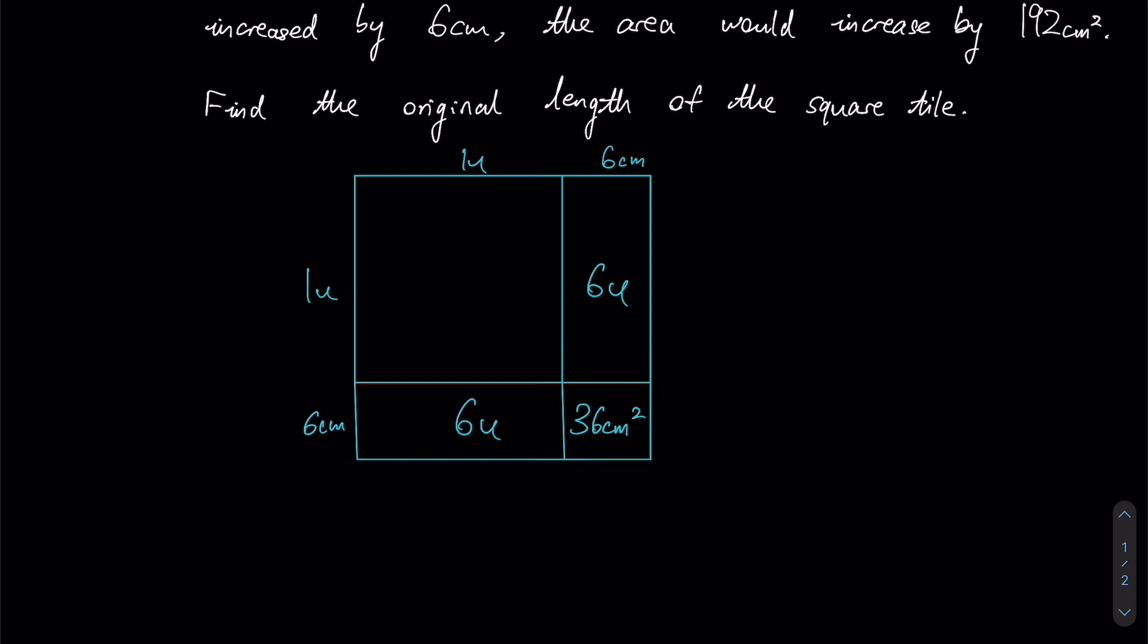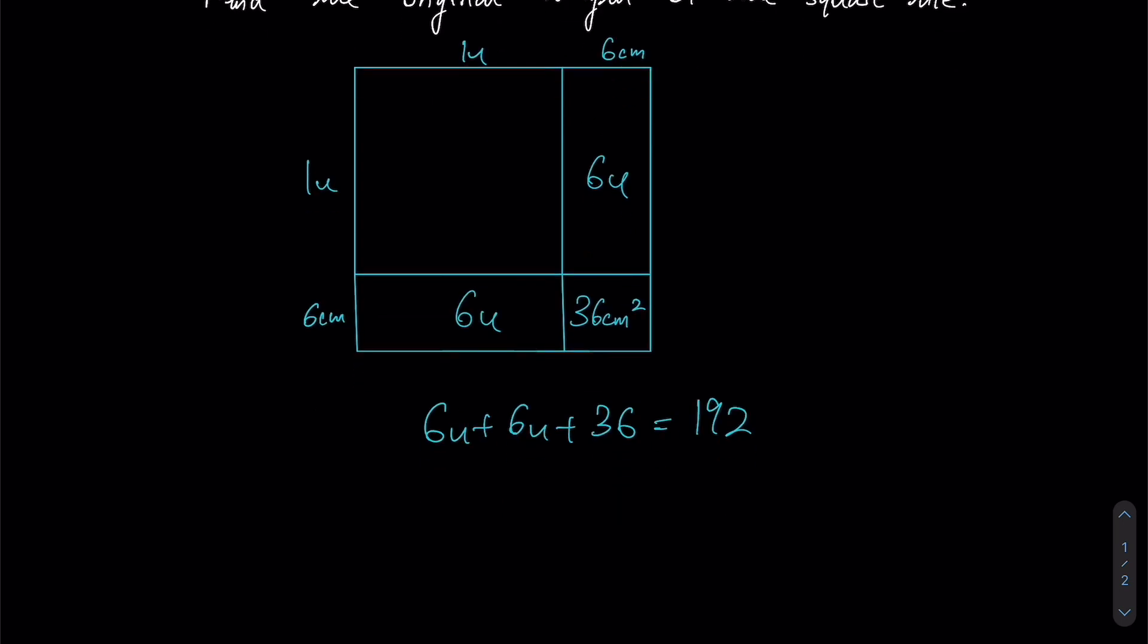So if my total increase is 192, then by adding these three up, they should be equivalent to 192 as well. Therefore, we can construct a simple equation as shown.